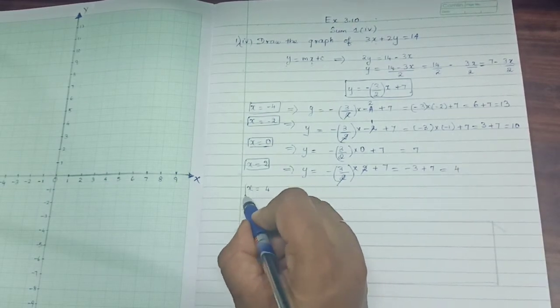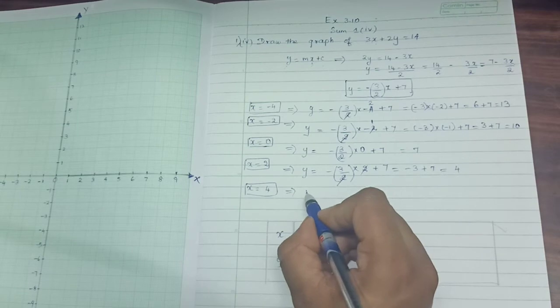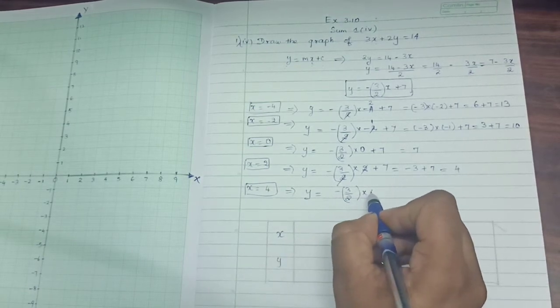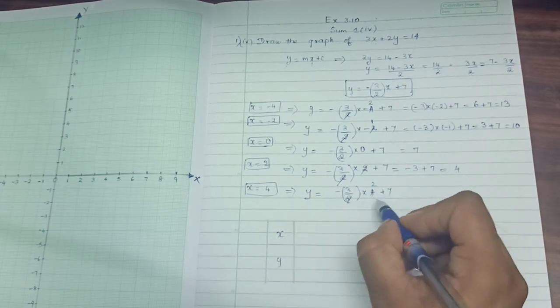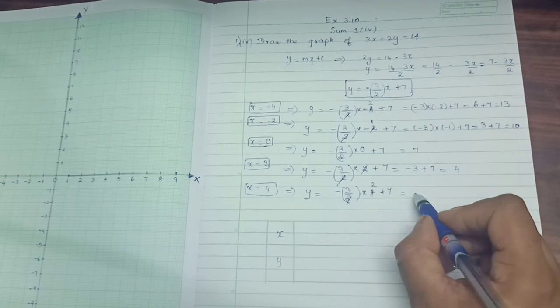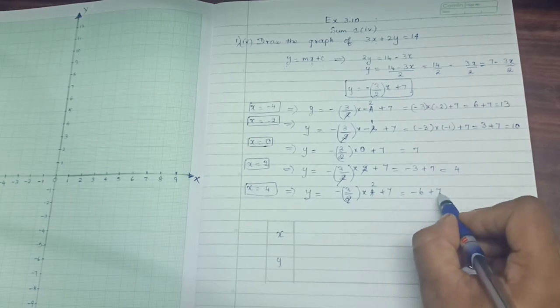Next, only one value. Last value. x equals 4 means y equals minus 3 by 2 into 4 plus 7. 2 into 4, what will happen? Minus 3 into 2. Minus 6 plus 7. That is 1.